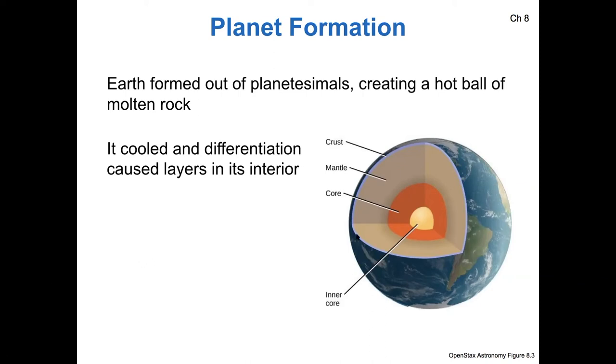well, it differentiated while it was fluid. So the heavier elements fell toward the core of the Earth, whereas the lighter elements floated toward the surface, resulting in this differentiated structure.